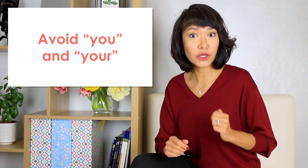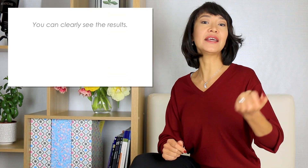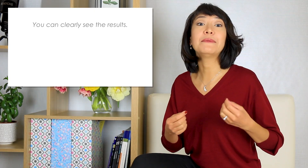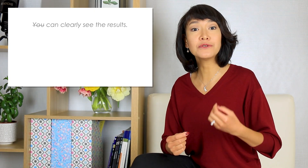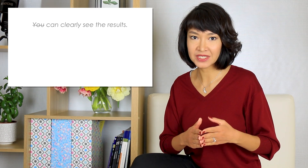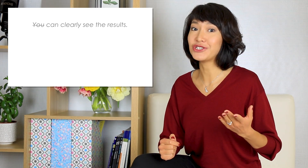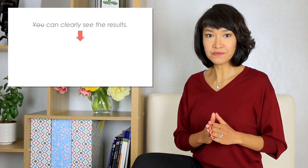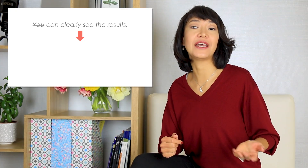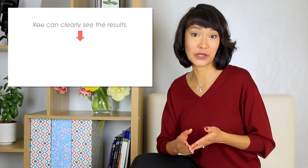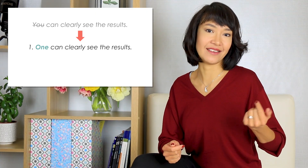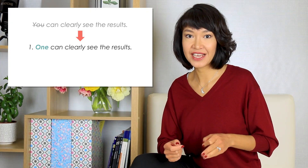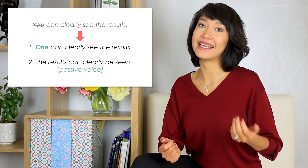Avoid YOU and YOUR. For example, 'You can clearly see the results.' Addressing readers using YOU can make your essay sound informal. It can also bring assumptions that are not there — are you absolutely sure the examiner can see the results? Instead, use ONE, which is a formal way to say any one person: 'One can clearly see the results.' Or you could use the passive voice: 'The results can clearly be seen.'